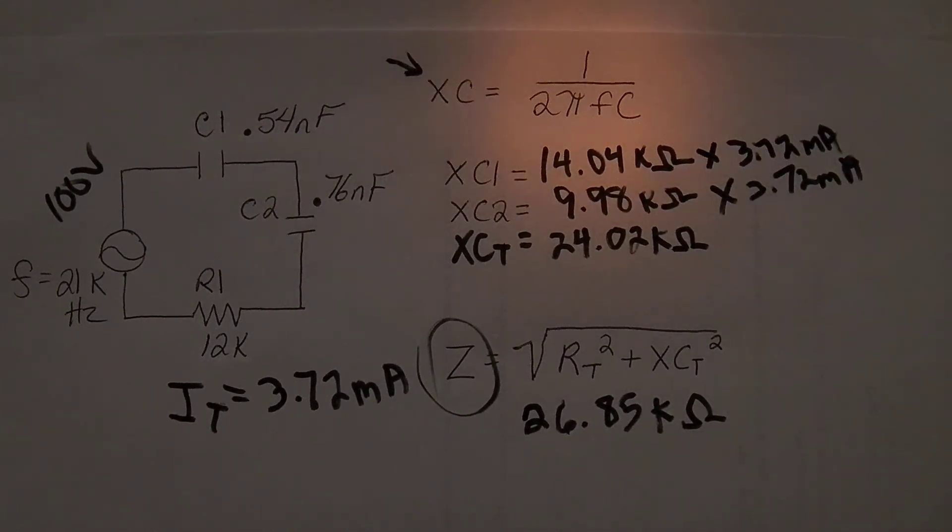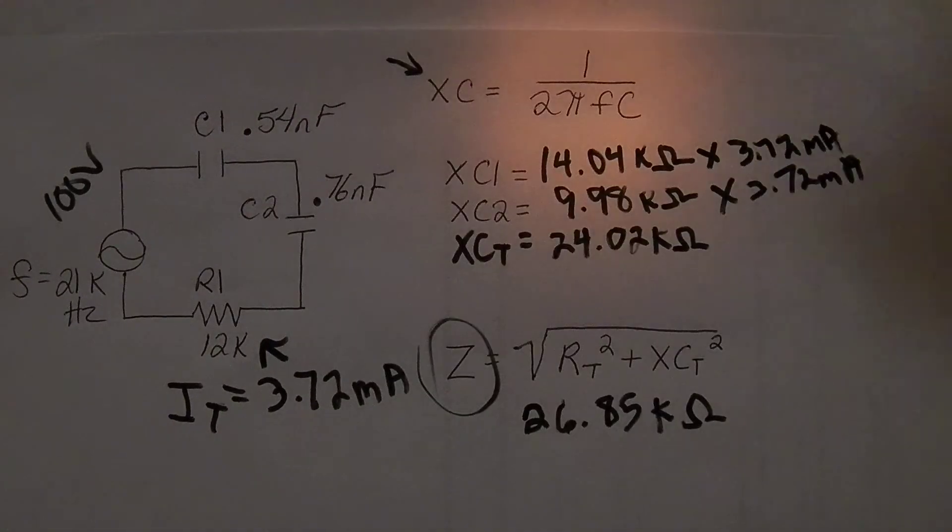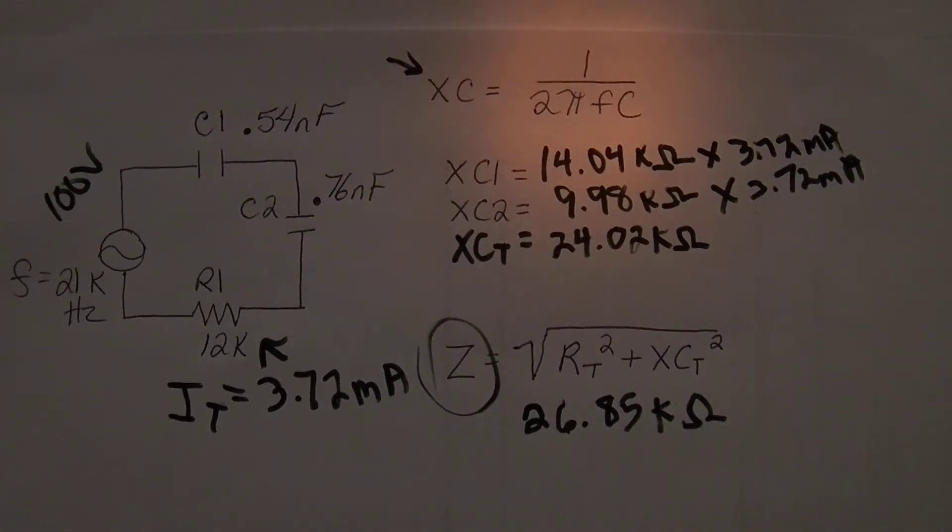And if I took this number and multiplied it by that number, I would also get the voltage drop of my resistor. And that is the total steps to get total current and total impedance and all the voltage drops for your resistive capacitive circuit.